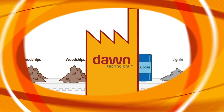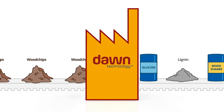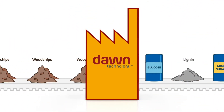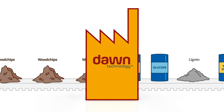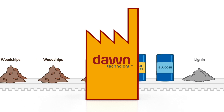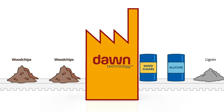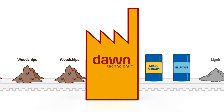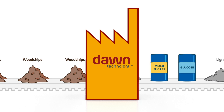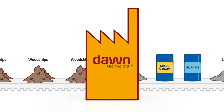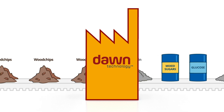The Dawn Technology Process lets us convert wood chips into a variety of valuable products, including sugars for industrial use.